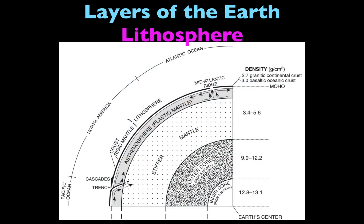The next layer we need to focus on is called the lithosphere. The lithosphere is a little unique because it's made up of two different parts of Earth's interior. The first part is the crust, which we already learned about. The next part is called the rigid mantle, highlighted there in green. Those two together make up the lithosphere. Towards the end of the unit you'll learn that the lithosphere is what the tectonic plates are made up of — Earth is broken up into all these different tectonic plates, and those are the lithosphere part of Earth's interior.